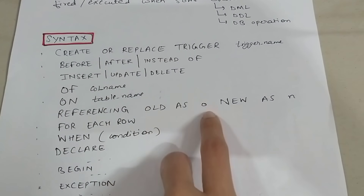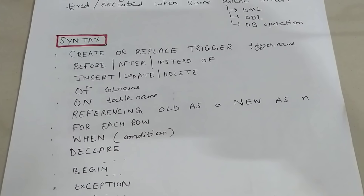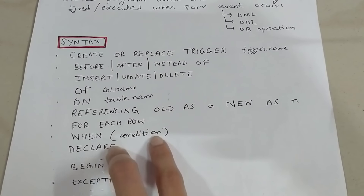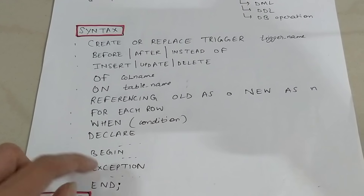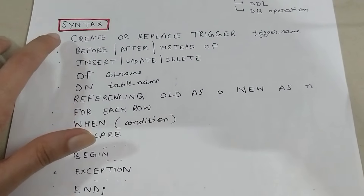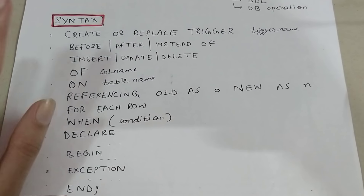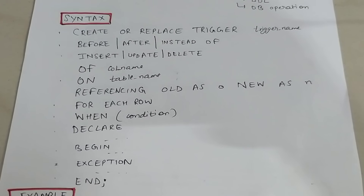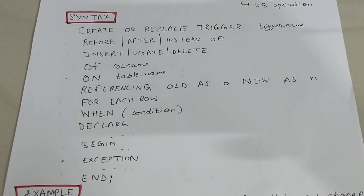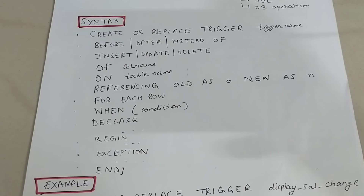The REFERENCING clause is optional — you are basically giving aliases to OLD and NEW, otherwise you can simply use OLD and NEW directly. FOR EACH ROW means this trigger will be fired for every row. Then you give a WHEN condition, and then DECLARE, BEGIN, EXCEPTION, END — just like any other procedure or function. The first three lines — CREATE OR REPLACE TRIGGER, BEFORE/AFTER, and ON table_name — are always present.